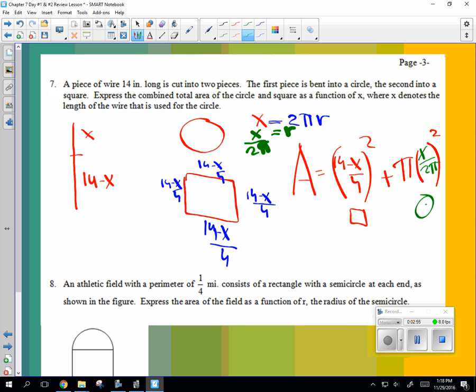And did we do what it told us to do? Do we have the areas? Do we have just X's? Yeah, we do. So if you wanted to simplify, you could. You're going to get 14 minus X squared over 16 plus pi X squared over four pi squared.